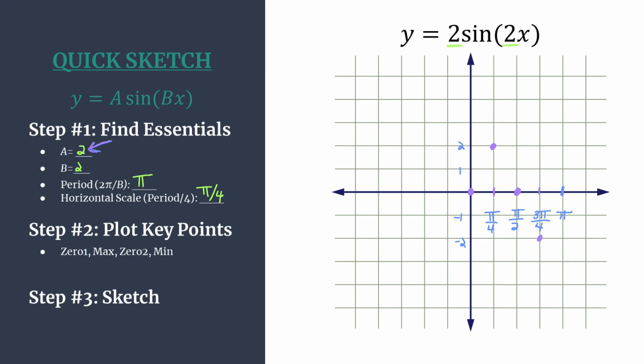Now all we have to do is sketch in the sine curve. Start at the origin and sketch in the sine curve. It would start repeating at π, so you could repeat for as many cycles as you need.